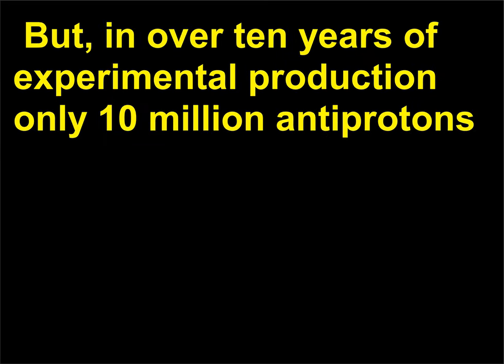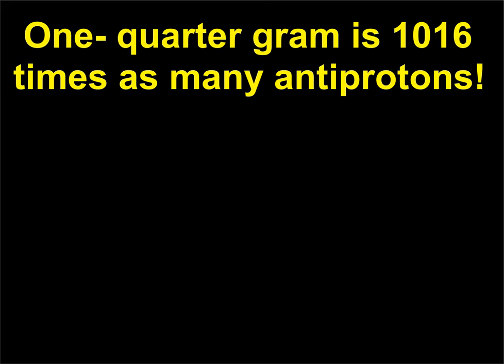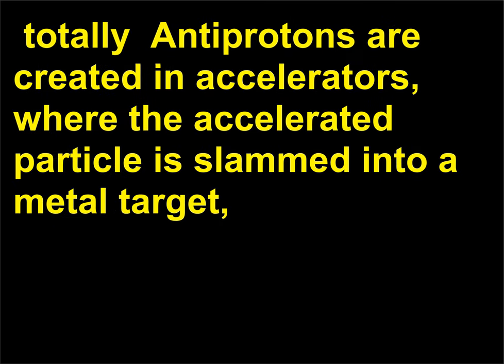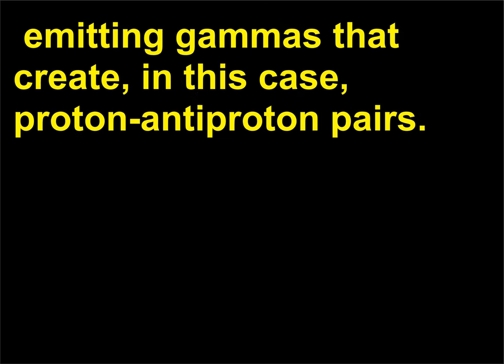But in over ten years of experimental production, only 10 million antiprotons have been trapped and stored for times ranging from seconds to months. One-fourth gram is 10^16 times as many antiprotons. Further, the antiprotons must be stored in extremely cold conditions. Antiprotons are created in accelerators where the accelerated particle is slammed into a metal target, emitting gammas that create proton-antiproton pairs.